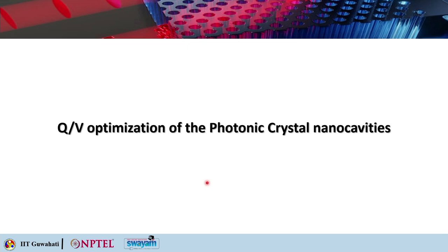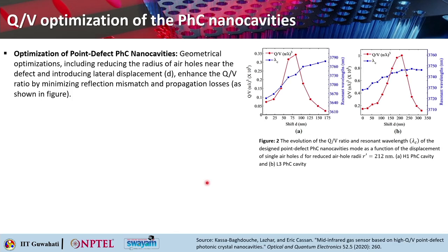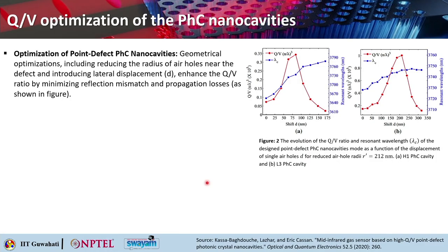Moving on to methods of optimization of the Q/V ratio in photonic crystal nano cavities: when talking about optimization, we play with geometrical parameters such as the radius or the shift d, which can significantly change the Q/V ratio. Geometrical optimization includes reducing the radius of the air holes near the defect and introducing lateral displacement d, which can enhance the Q/V ratio by minimizing reflection mismatch and propagation losses.